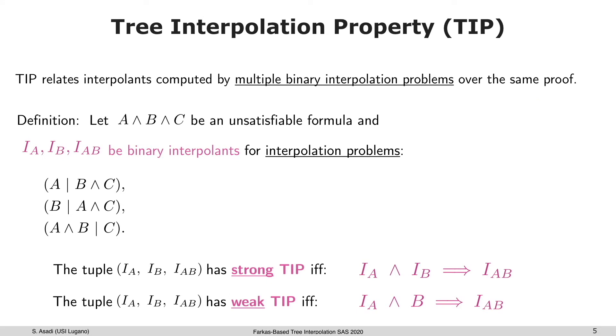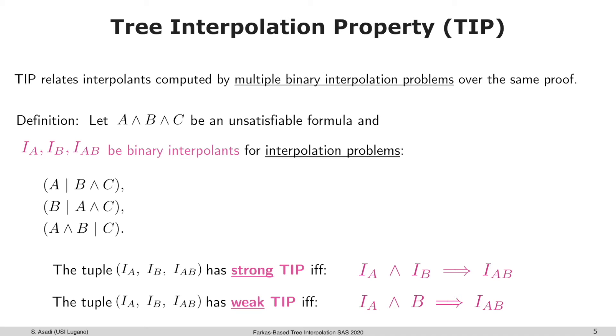The definition is: having A, B, and C as an unsatisfiable formula, and I_A, I_B, and I_AB as binary interpolants for the following interpolation problems. We say the tuple has strong TIP if the condition I_A and I_B implies I_AB, and the tuple has weak TIP if it satisfies I_A together with the original B formula that implies I_AB. Don't worry if it's not clear; I'm going to elaborate with an example.